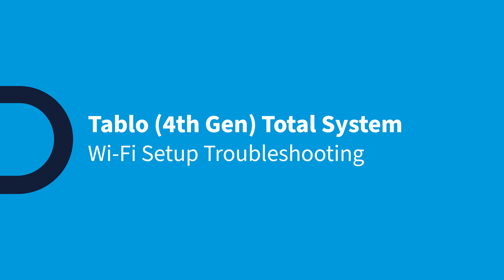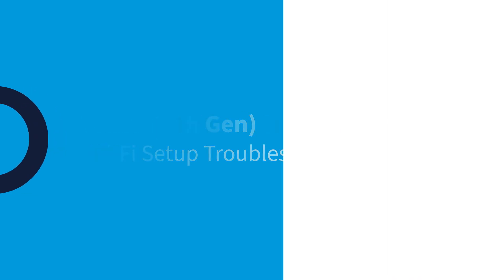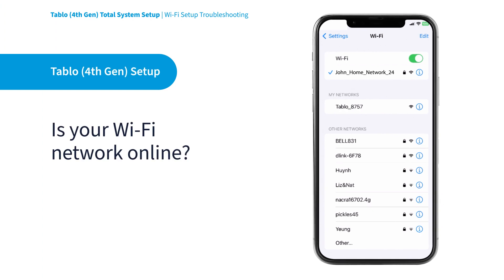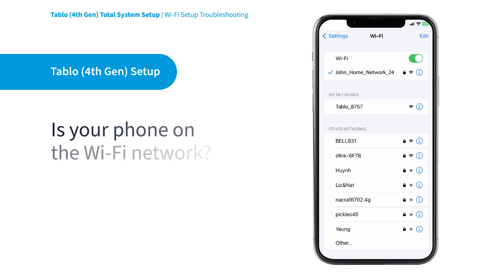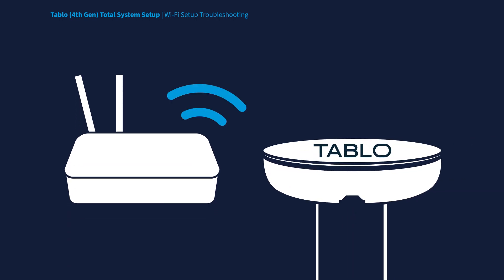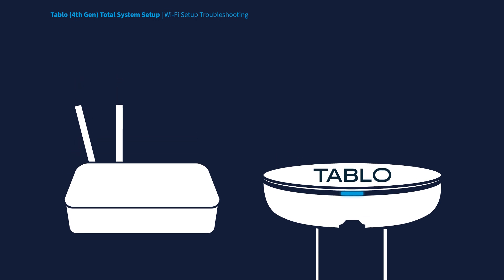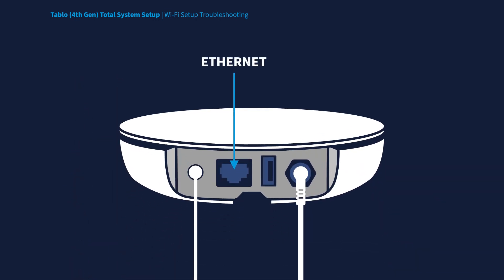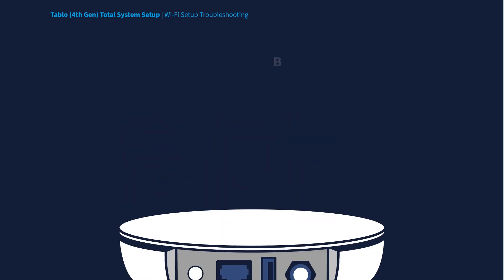Having trouble with the Tableau Wi-Fi setup? Here are a few quick troubleshooting steps to try. First, you should verify that your home's Wi-Fi network is online, and that your mobile device is connected to that Wi-Fi network instead of your mobile data provider. It also helps if your Tableau and your router are as near as possible, even if only during the Wi-Fi setup process. And remember to make sure that there is nothing plugged into the Ethernet port, as well as the USB port on your Tableau device.